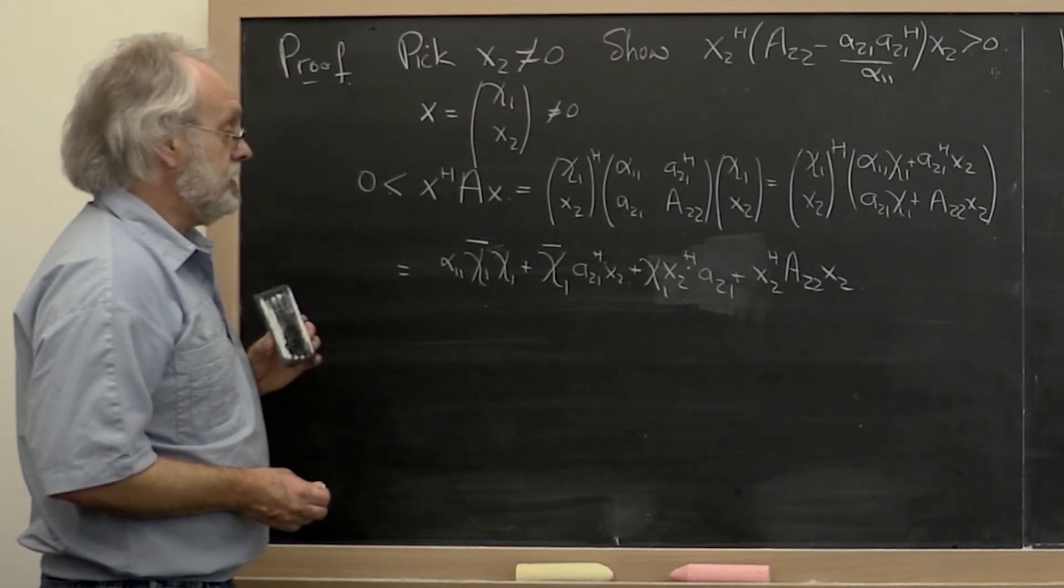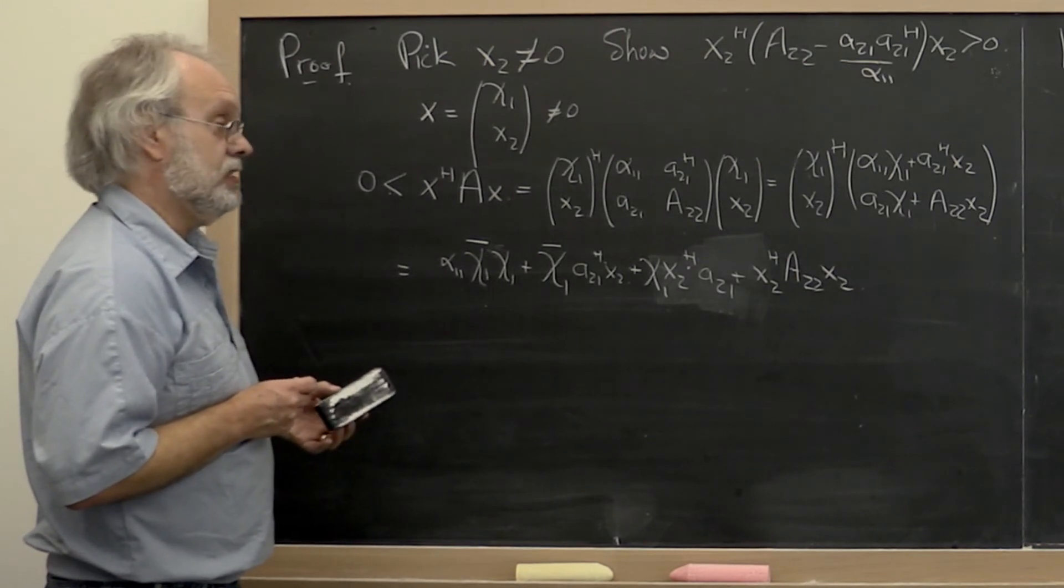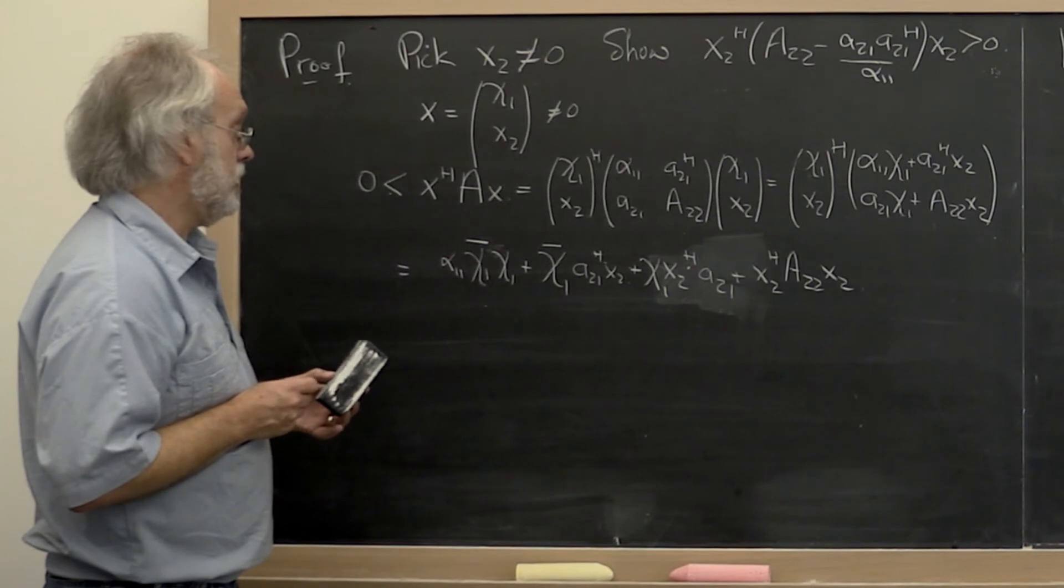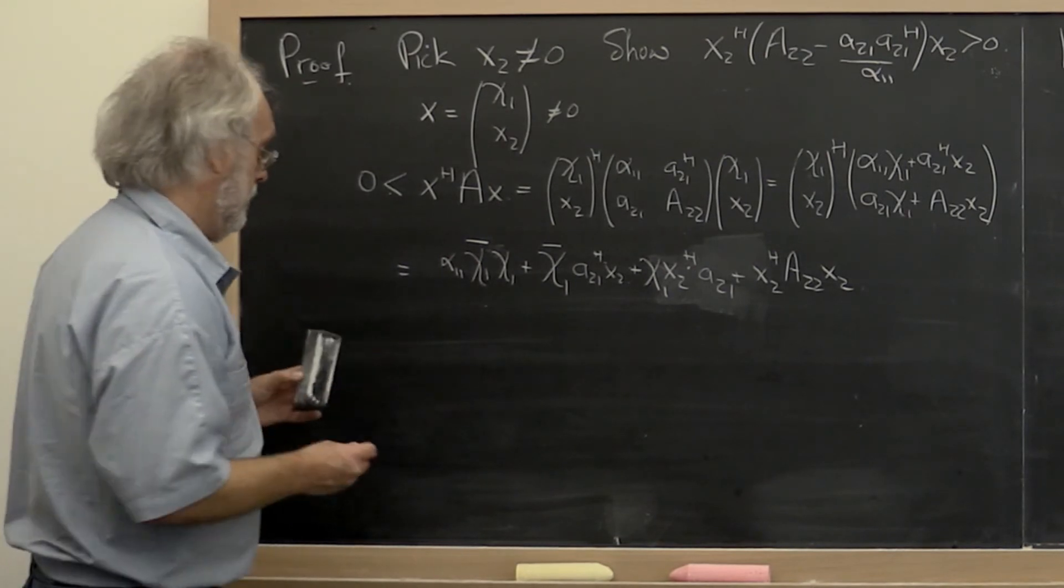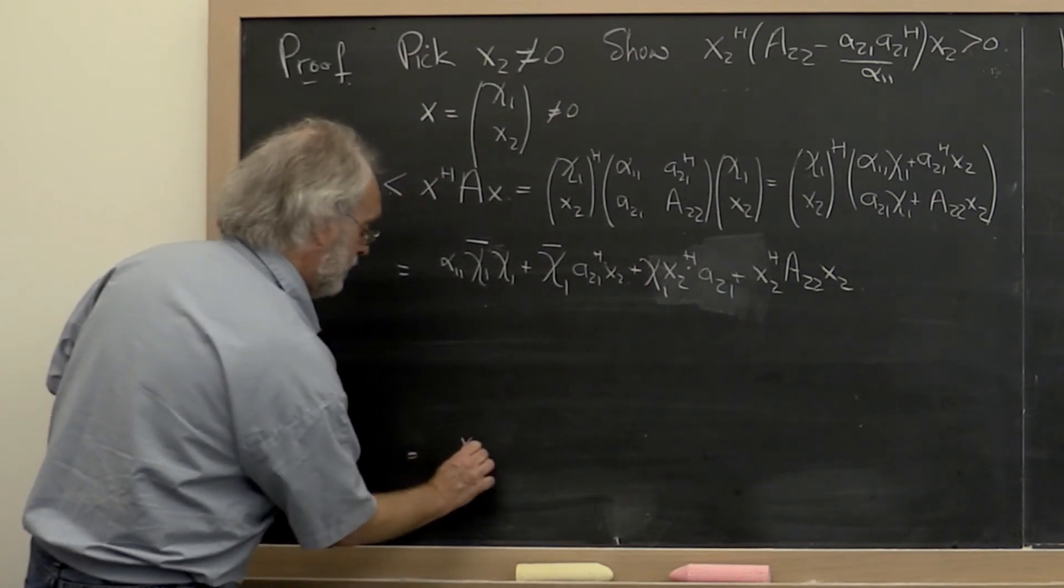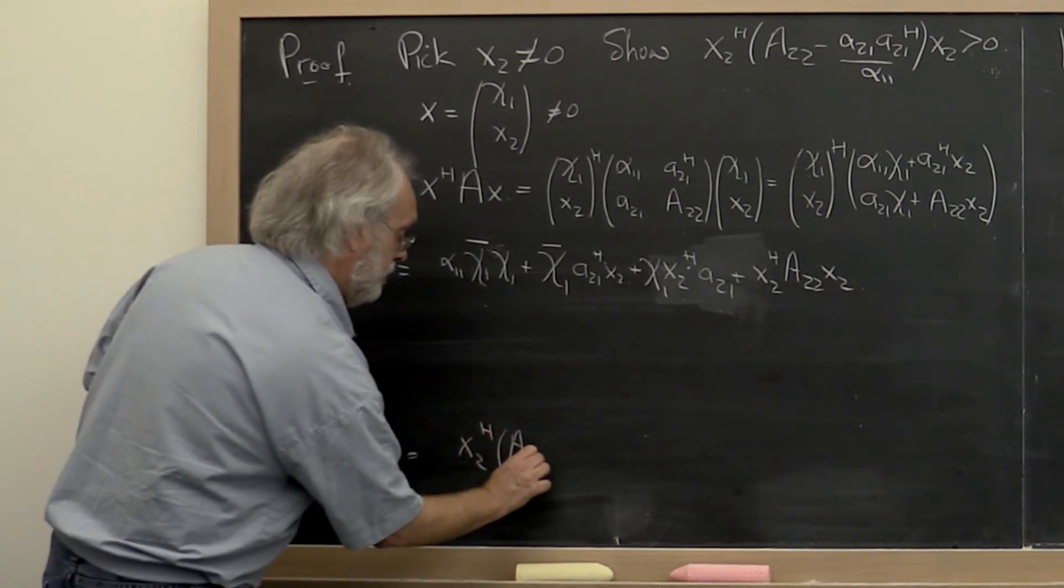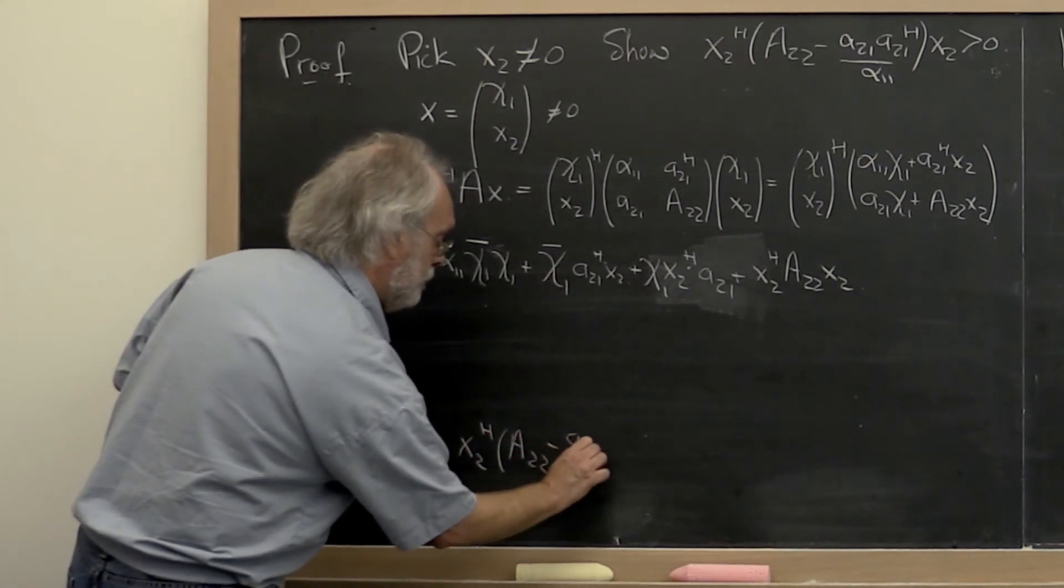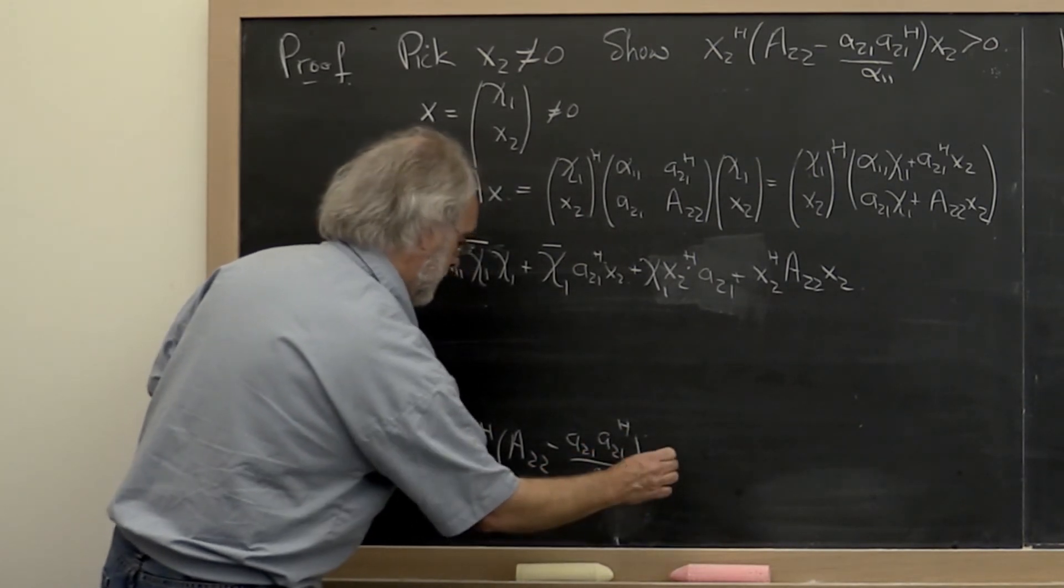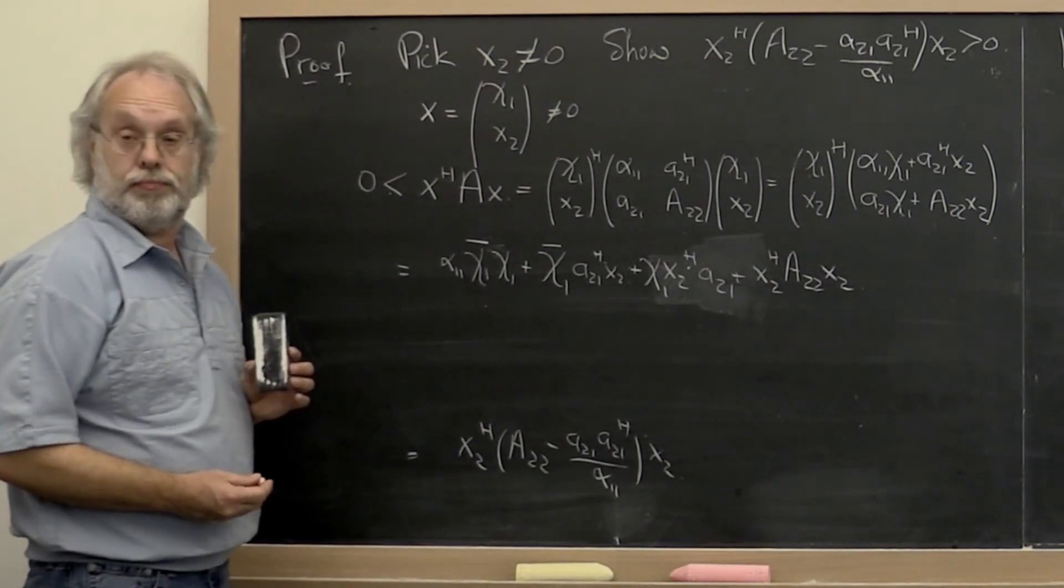And now it comes down to trying to be clever. We want somehow this whole thing to equal x2 Hermitian times the quantity A 2 2 minus A 2 1 A 2 1 Hermitian over alpha 1 1 times x2.